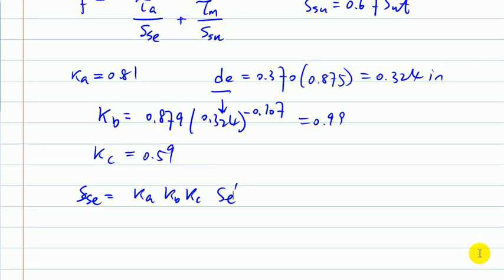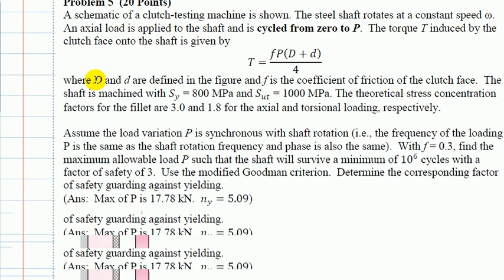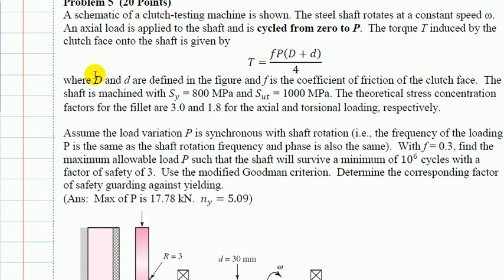Once you have S_se, plug in tau_a and tau_m to calculate n_f. If you want to use the Gerber criterion, the same approach applies with a different formula.